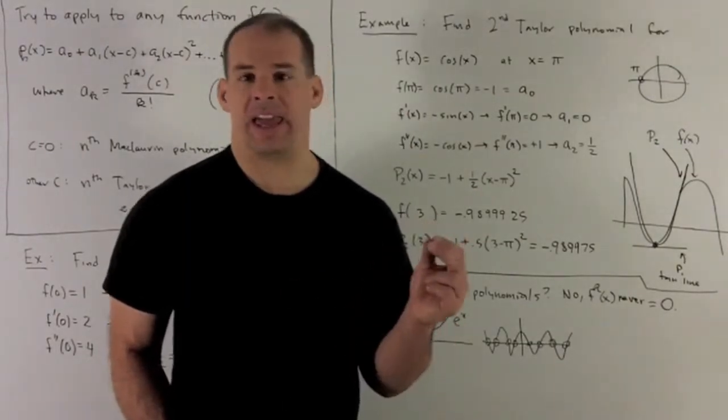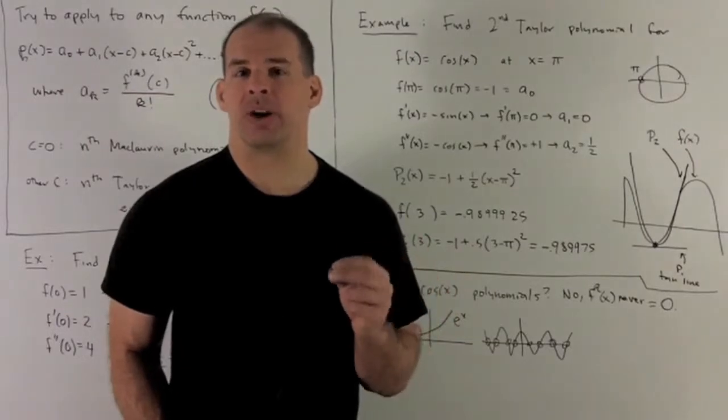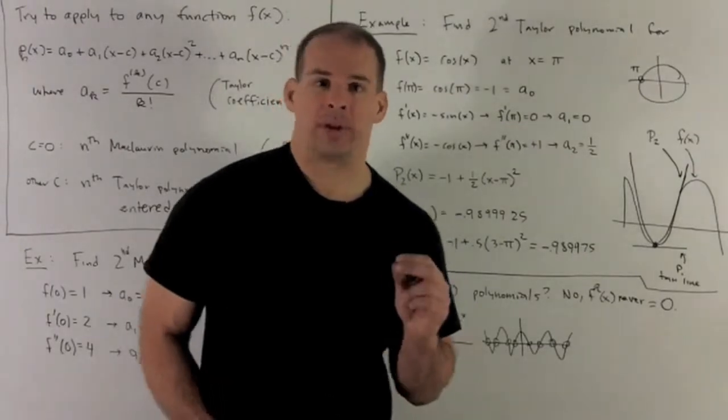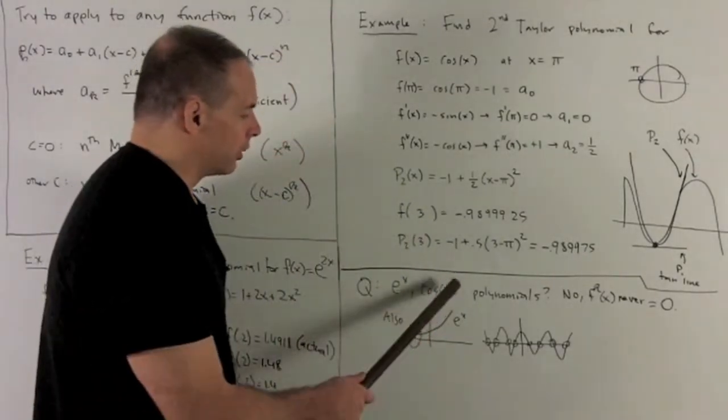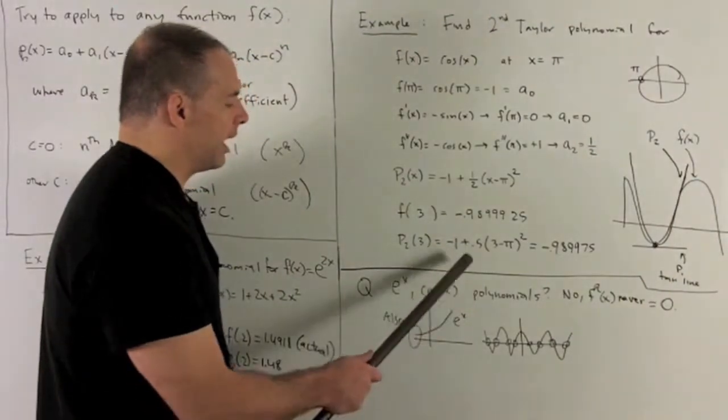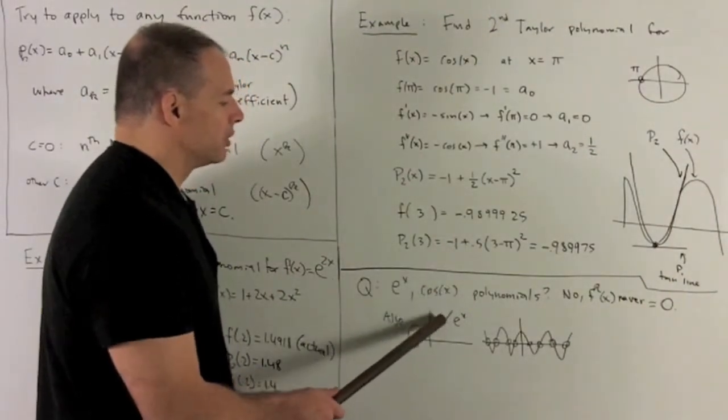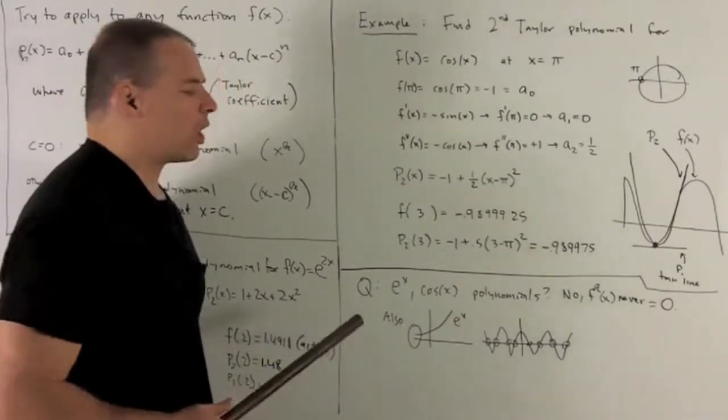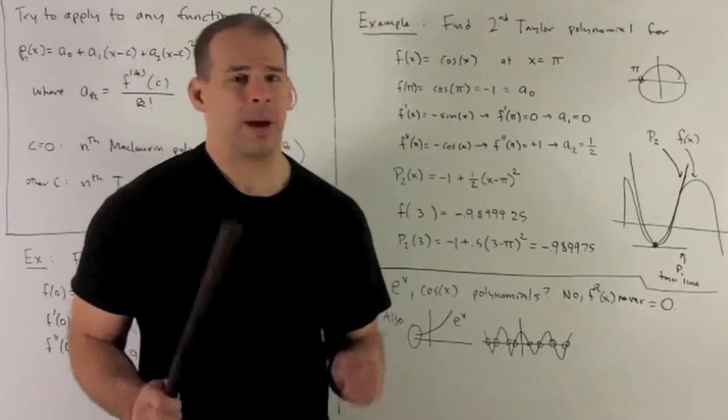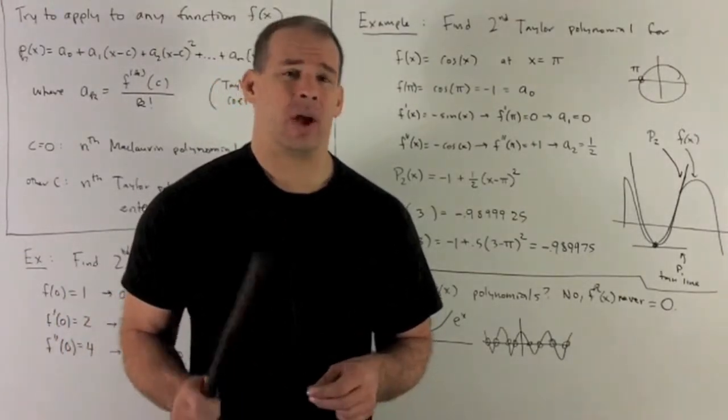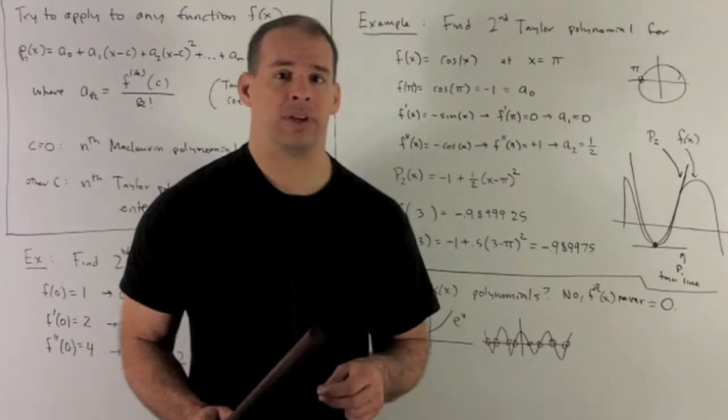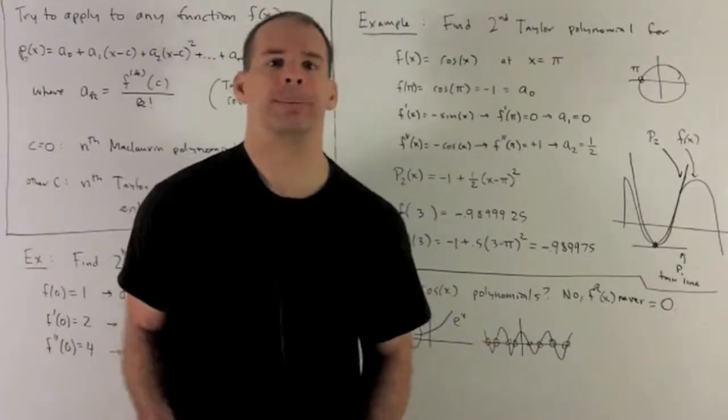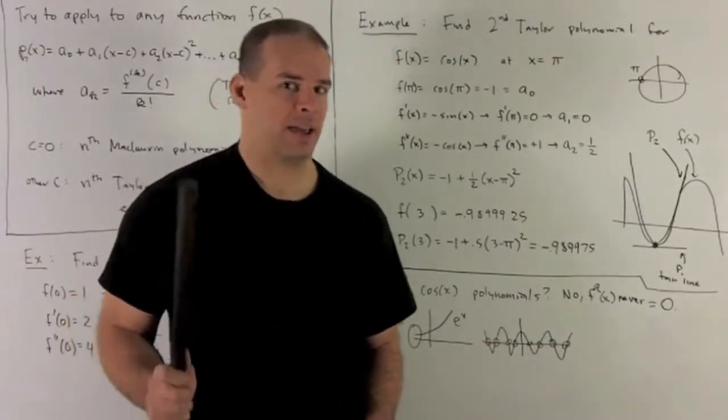With a polynomial, say x to the n, you take n plus 1 derivatives, that thing goes completely to 0. So e to the x can't be a polynomial. If we look at the graph, take a look at the graph of e to the x. If we look at the behaviors, we go out to infinity. So here it's going to go up. But when we come off to go out to minus infinity, this thing's going to have a horizontal asymptote. Polynomials can never have horizontal asymptotes. They always obey the behavior of their lead coefficient. So that means they're either going to go both up, both down, or one up, one down.